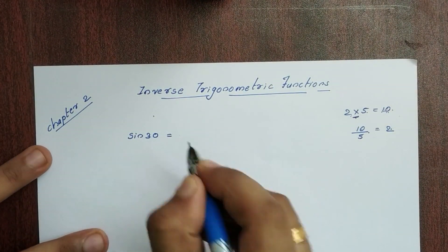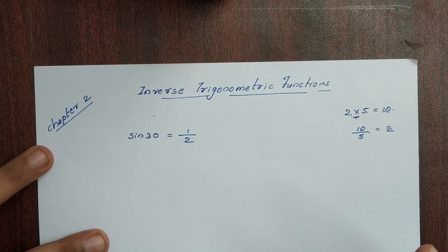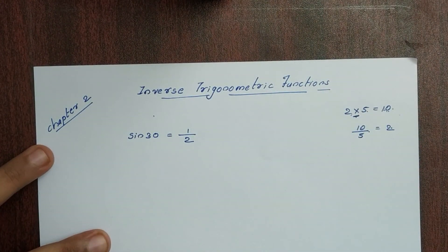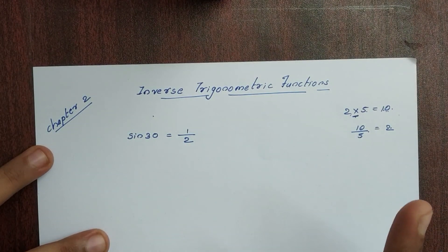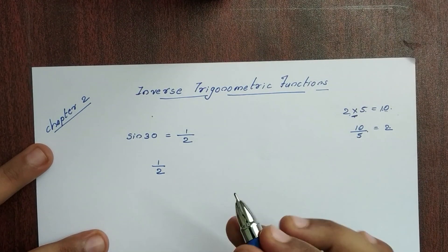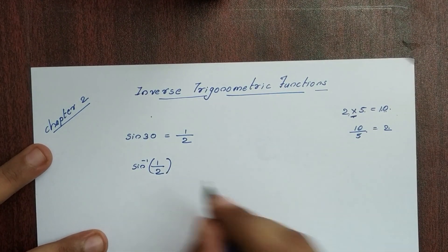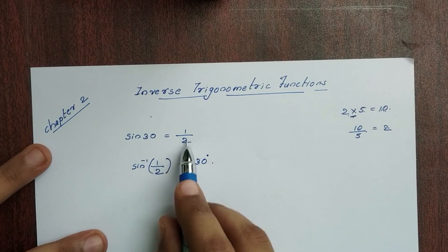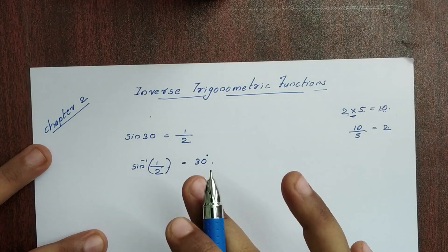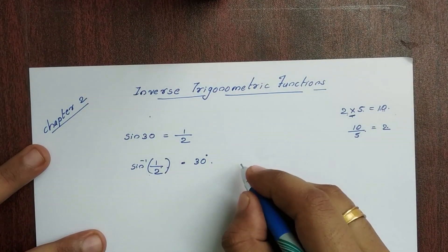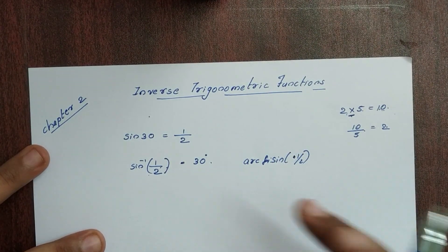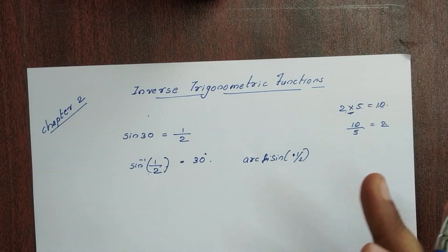Now, we are using trigonometry. I am using sin 30. Since sin 30 is 1/2, we are using trigonometric functions and trigonometric values. We are using the sin 30 value, that is 1/2. When we use sin 30, we have sin(1/2). Now, sin inverse of 1/2 — this is the inverse function — is equal to 30 degrees. So here we are using sin inverse of 1/2. The inverse is represented as arc sin. So arc sin(1/2) is the inverse.